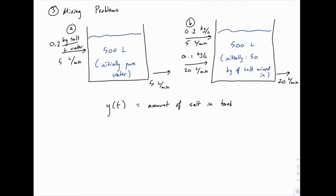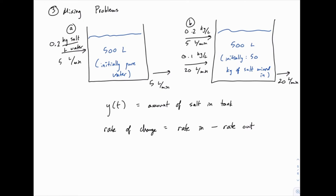The key to both problems and to any mixing problem is that if we're looking for the amount of salt in the tank y, the rate of change of y equals the rate coming in minus the rate going out. We need to find how quickly salt enters the tank and how quickly salt leaves — the difference between those two gives us the rate of change. So dy/dt equals the rate in minus the rate out.